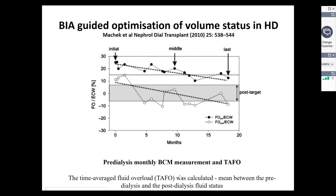The fluid overload index, which is a measure of the composition of volume normalized to the extracellular weight over months, is shown reducing as the patient approaches their target weight, both for the pre- and post-weight measures. Measurements were taken at the start of the study, at the middle, and towards the end. The time-averaged fluid overload index gives a mean of the pre-dialysis and post-dialysis fluid status — a tool to more directly measure the extracellular water compartment rather than body weight alone.